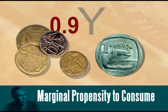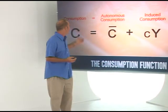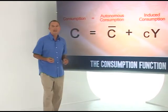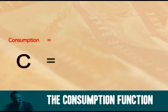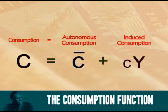The consumption function states that consumption spending, C, is made up of autonomous consumption, C bar, plus induced consumption, which is our marginal propensity to consume, small c, multiplied by our income, Y.